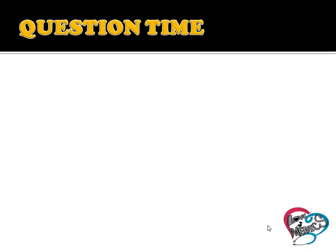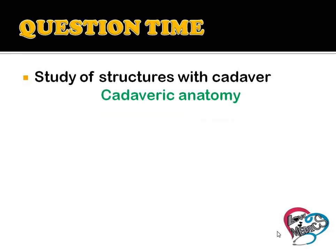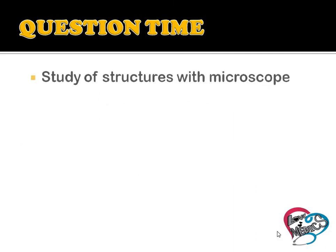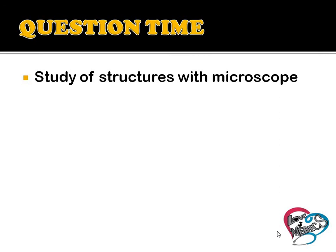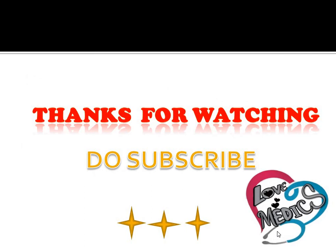Quick review: Study of structures with the help of a cadaver is called cadaveric anatomy. An example of developmental anatomy is embryology. Study of structures with the help of microscopy is called microscopic anatomy. X-ray, CT, and MRI are used in radiographic anatomy. Thanks for watching.